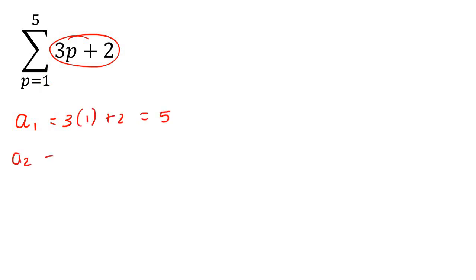Then to find term number two, you increase this number by one. So now we're going to plug in a two, and that's going to be eight. Then you're going to go find term number three by plugging in the next number, which would be a three, so three times three plus two, which is 11.